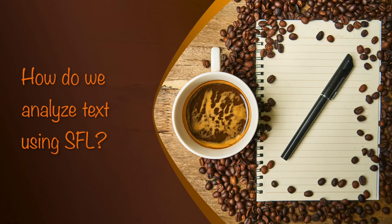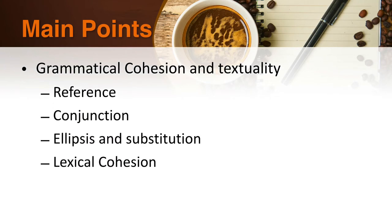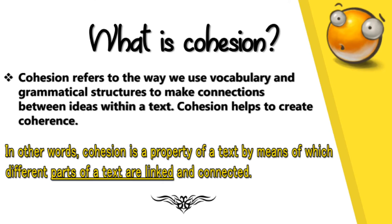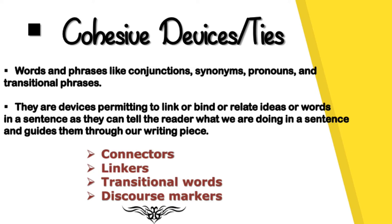With these concepts, we are now ready to analyze text using SFL. We need to learn first grammatical cohesion and textuality, which includes reference, conjunction, ellipsis and substitution, and lexical cohesion. Cohesion helps to create coherence, and when a text is cohesive, the ideas tend to stick together — all the ideas within the text are connected with one another. We make texts cohesive simply by using transitional devices, also called connectors, linkers, transitional words, or discourse markers.